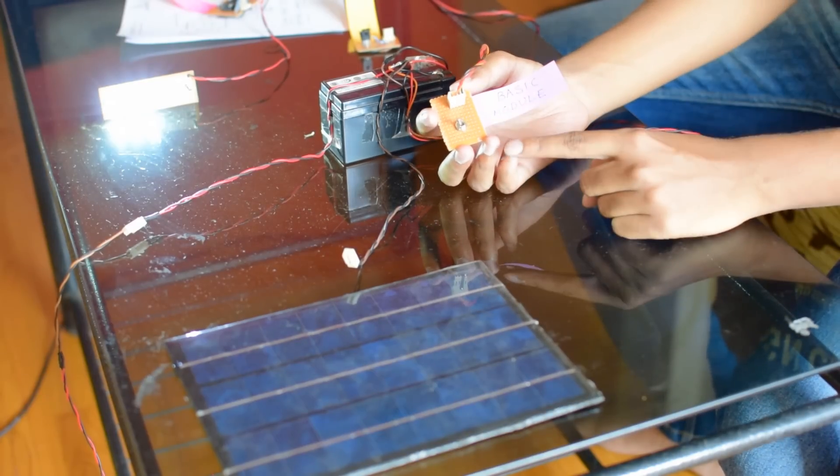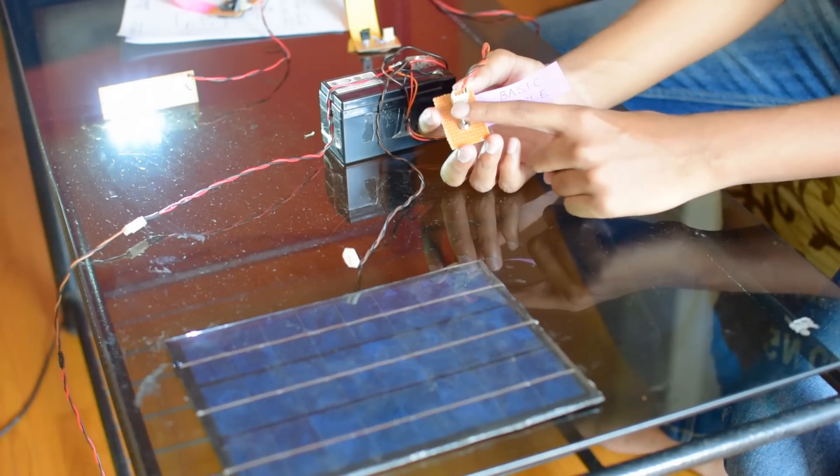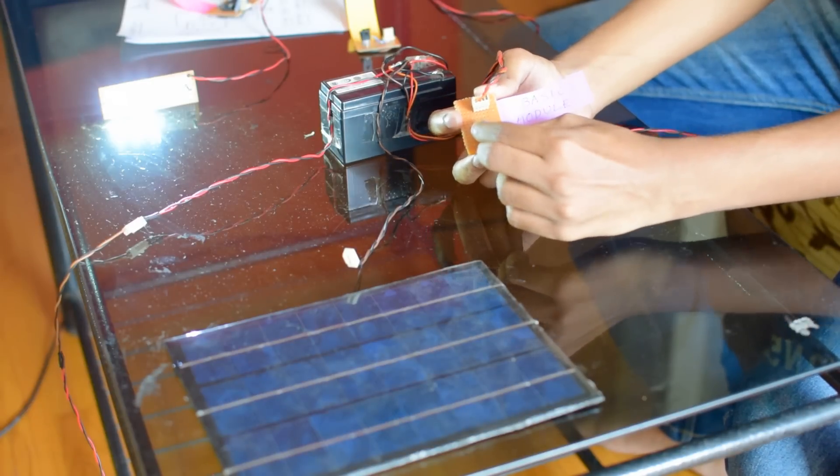Now I have connected the basic module. This is the most simple one. It has only a connector and a simple switch. You can use this switch to turn the LEDs on or off.